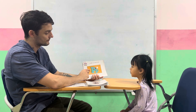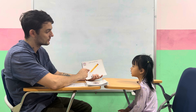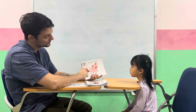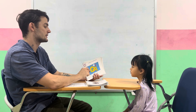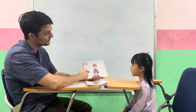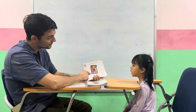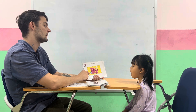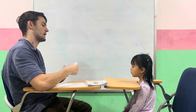Letter P. P is for pencil. Letter Q. Q is for queen. R is for run. R is for rabbit. Good job. Thank you. Bye-bye.